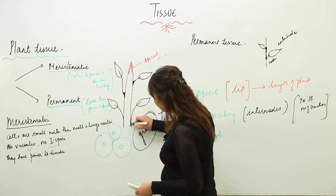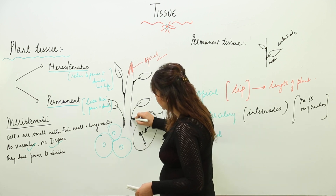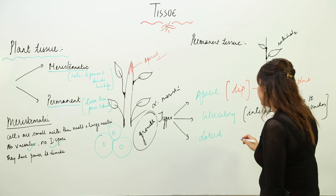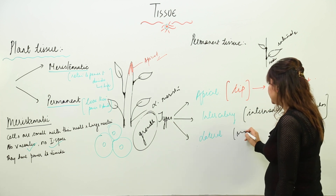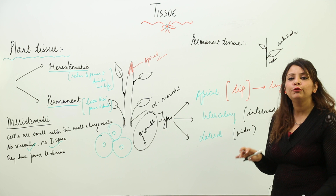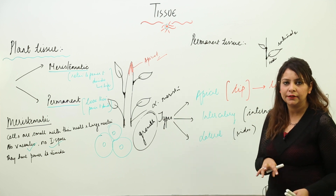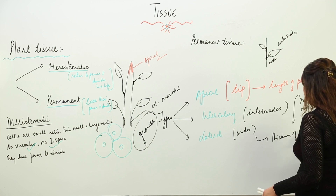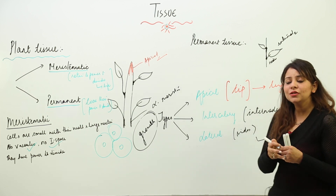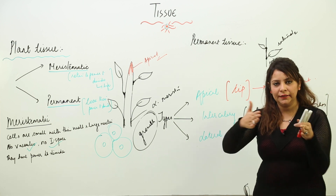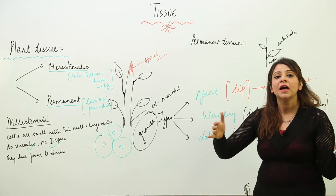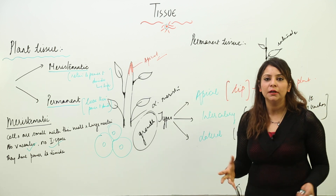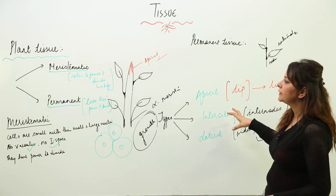Lateral meristem is present on the sides of the plant — between the food-conductive tissue and the water-conductive tissue. Its function is to increase the thickness of the plant, making it grow laterally. So apical helps the plant grow taller, intercalary increases the number of branches, and lateral increases thickness.